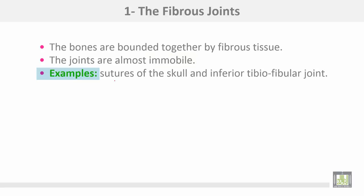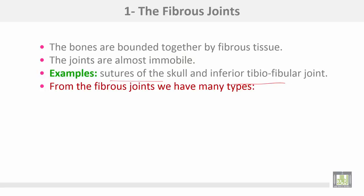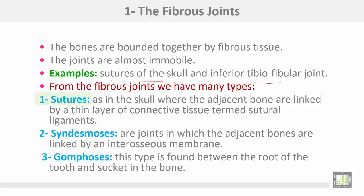Examples of fibrous joints include sutures of the skull and the inferior tibiofibular joint. Fibrous joints have several types: number one, sutures as in the skull, where adjacent bones are linked by a thin layer of connective tissue called suture ligaments; number two, syndesmosis, where adjacent bones are linked by an interosseous membrane; number three, gomphosis, found between the root of the tooth and the socket in the mandible or maxilla.